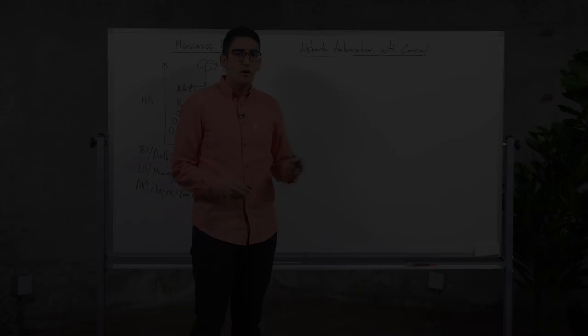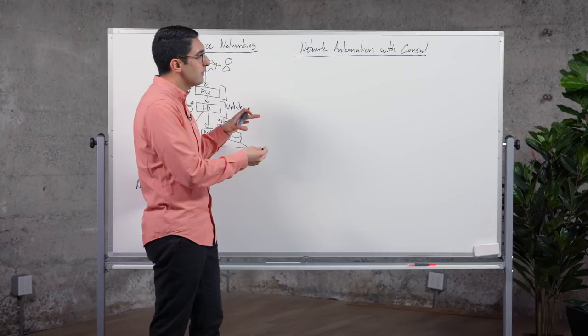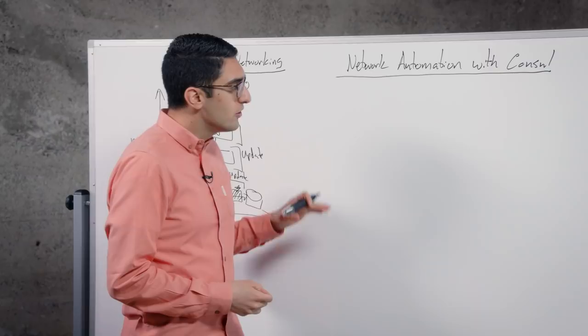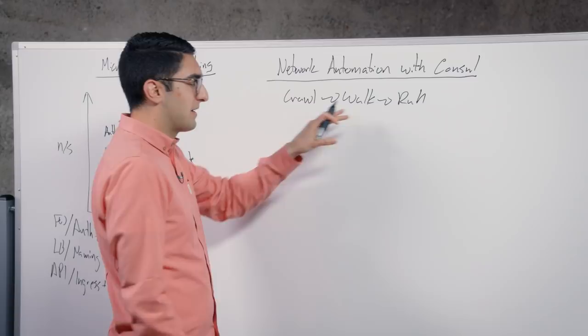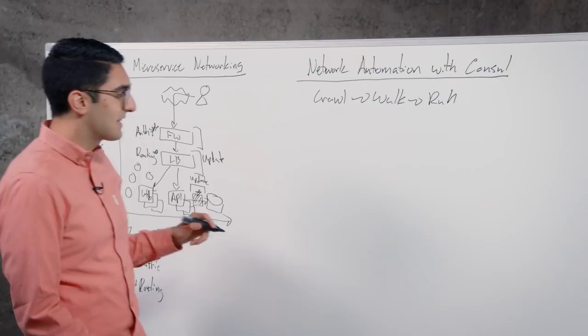As we talk about the challenges of microservices in the networking environment, these are really what we're trying to solve with Consul, primarily through the use of network automation. When we talk about Consul, it's natural to describe a crawl, walk and then run journey. I think with anything, it's hard to go from zero to 60. There's incremental value at different stages of automation throughout our infrastructure.